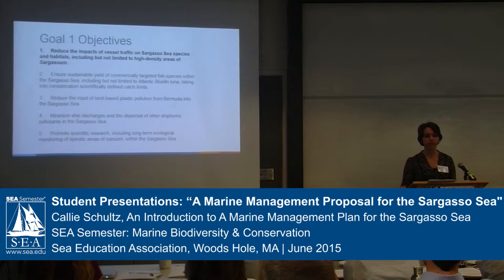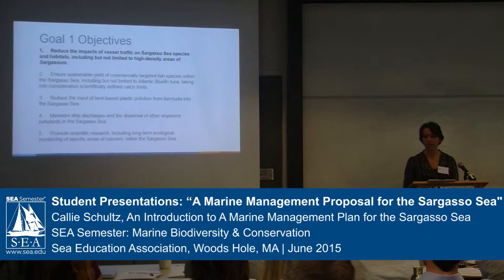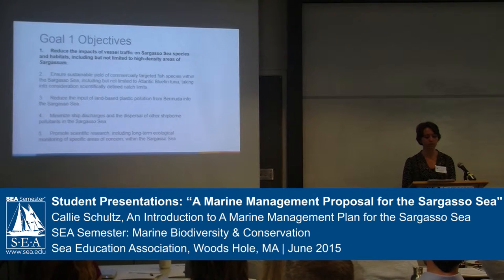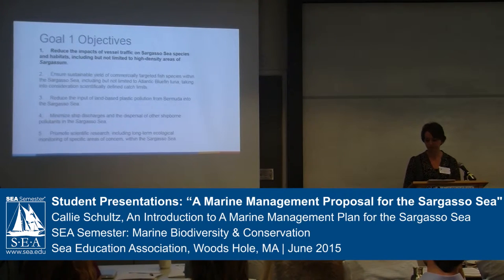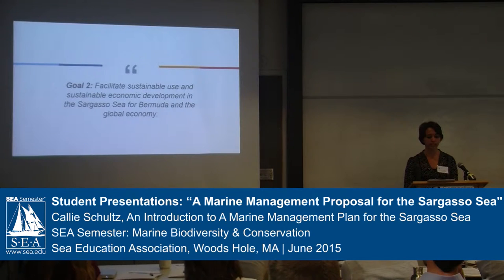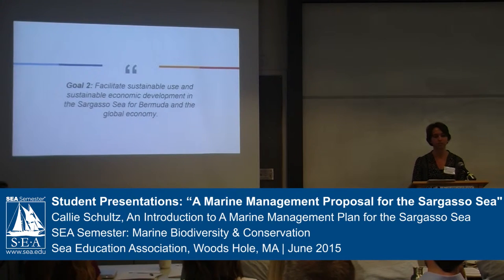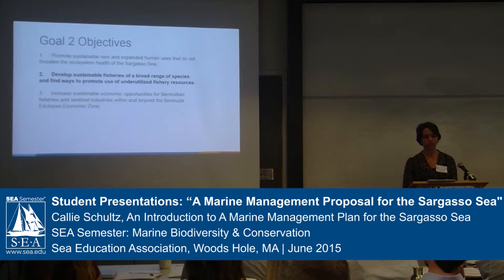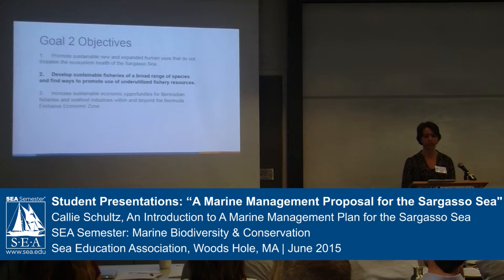We have created a printout of all of our goals and objectives, which are in the packets and on the welcome table, since we will only discuss one example objective per goal. Our example objective for our first goal is to reduce the impacts of vessel traffic in the Sargasso Sea and its habitats, including but not limited to high-density areas of Sargassum. Our second goal is to facilitate sustainable use and sustainable economic development in the Sargasso Sea for Bermuda and the global economy, addressing overfishing and promoting sustainable use of Sargasso Sea resources. One objective is to develop sustainable fisheries of a broad range of species and find ways to promote use of underutilized fishery resources.